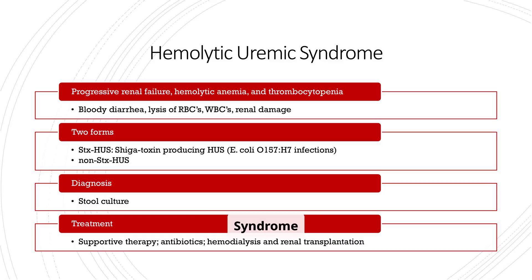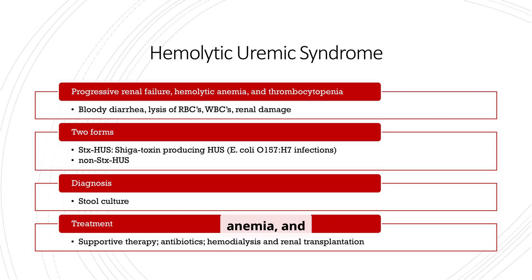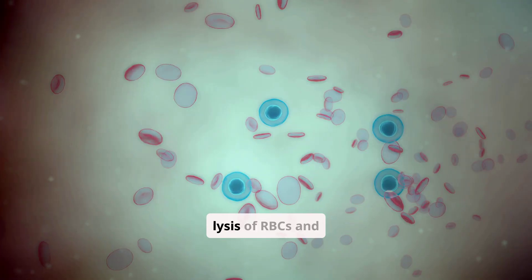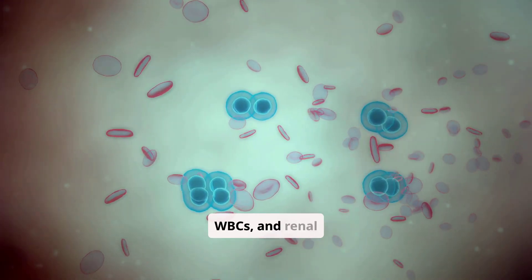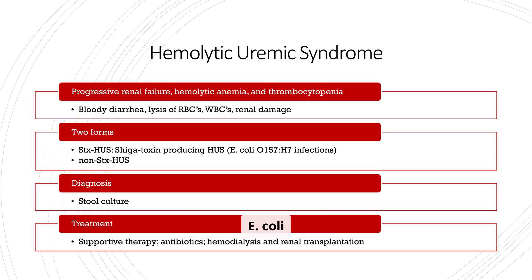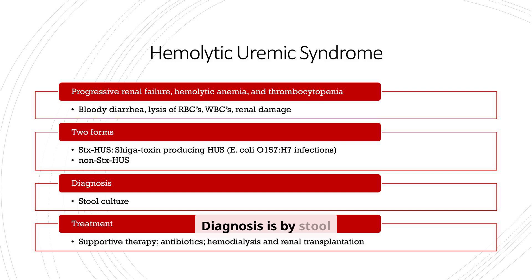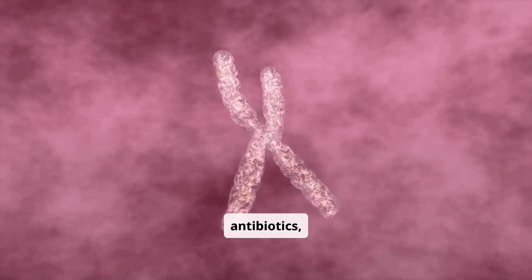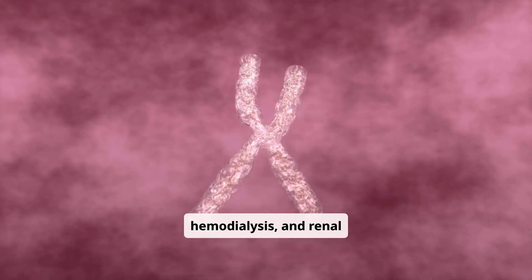Hemolytic uremic syndrome (HUS) involves progressive renal failure, hemolytic anemia, and thrombocytopenia. It presents with bloody diarrhea, lysis of RBCs and WBCs, and renal damage. There are two forms: STX-HUS (shiga toxin-producing HUS), often from E. coli O157:H7 infections, and non-STX-HUS. Diagnosis is by stool culture. Treatment is supportive therapy, antibiotics, hemodialysis, and renal transplantation.